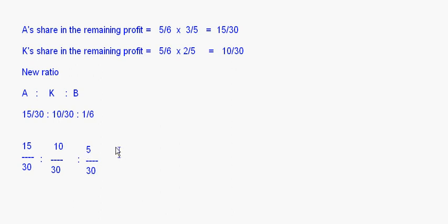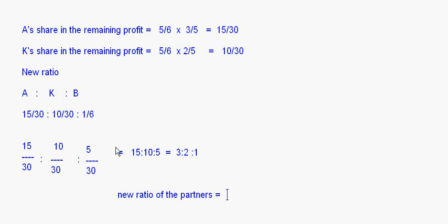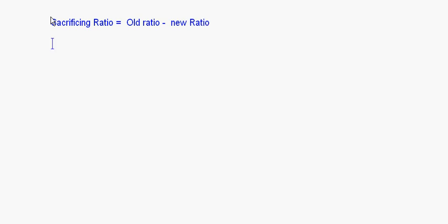This simplifies to 15:10:5, or we can write it as 3:2:1. So the new ratio of the partners is 3:2:1. Now we have to find the sacrificing ratio. As established, the sacrificing ratio equals the old ratio minus the new ratio.